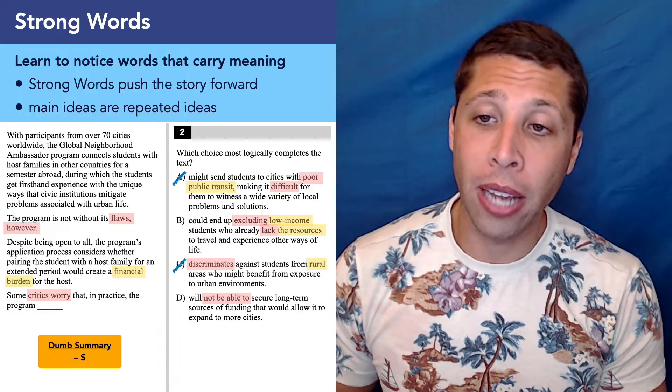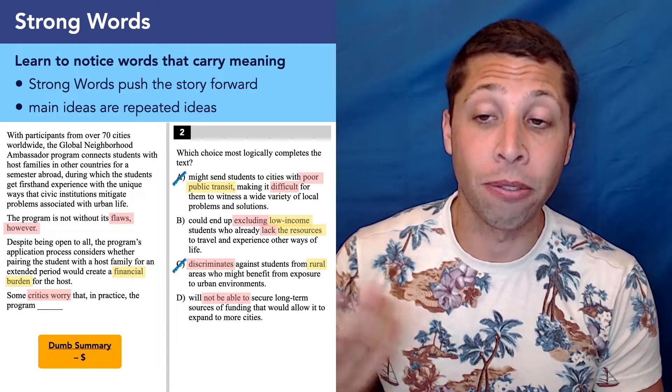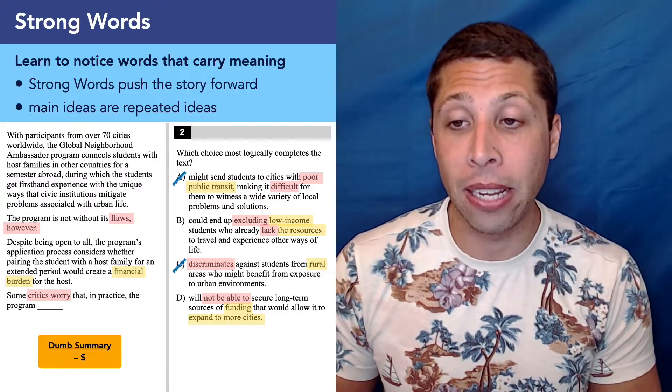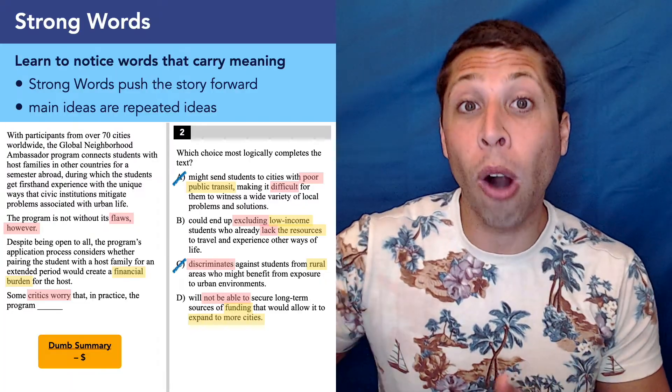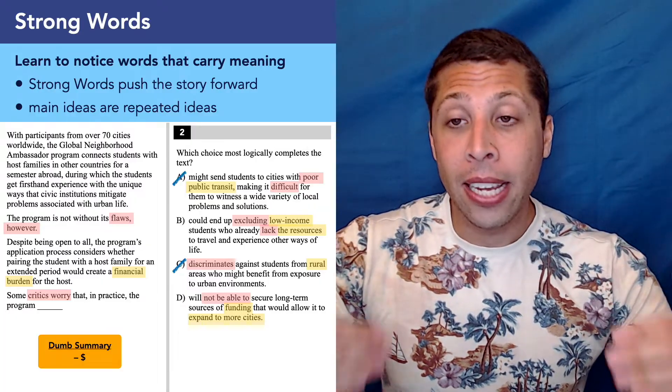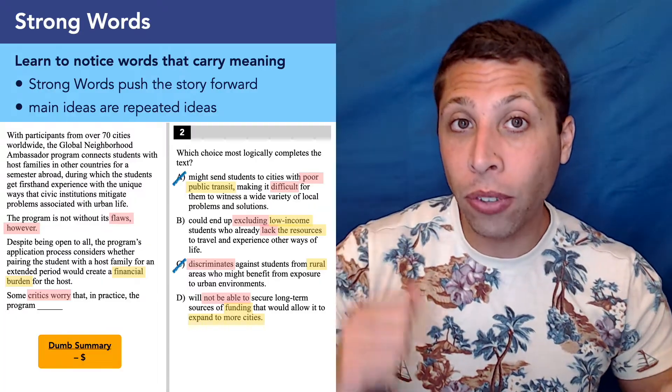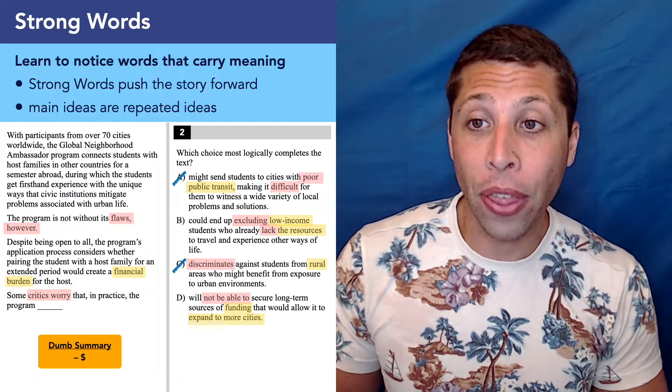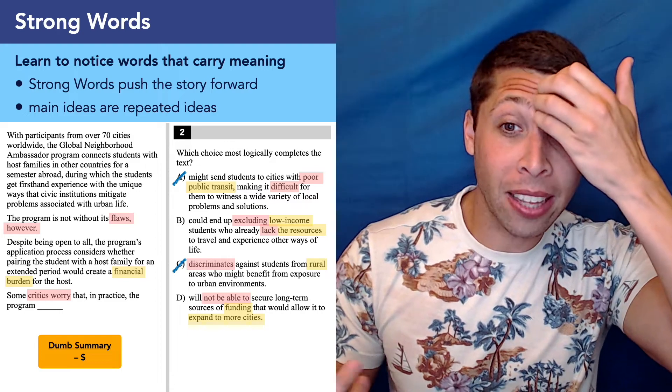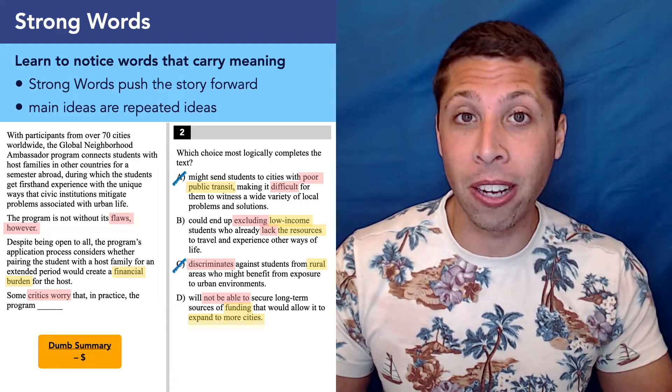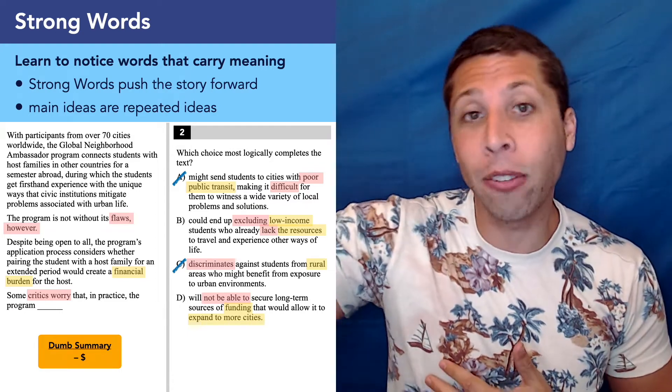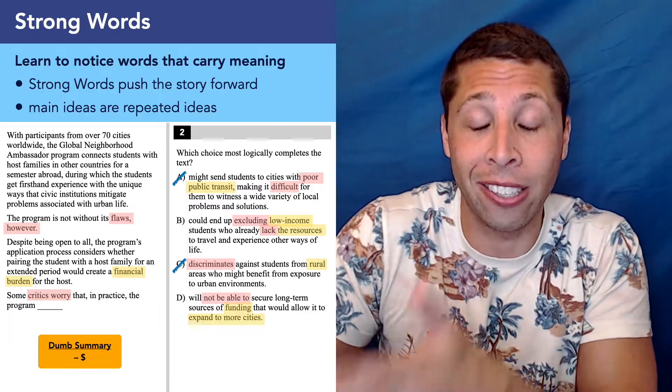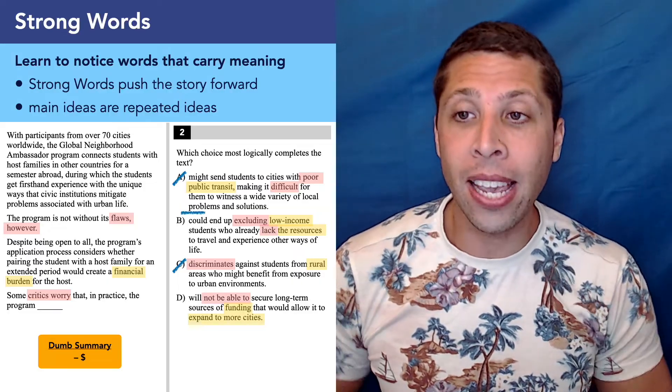Choice D, the program will not be able to secure long term sources of funding that would allow it to expand to more cities. Well, funding definitely hits that finance piece. But notice this choice is stronger than B. It hits the funding idea, hits the money idea, but then it goes further, expanding the program to more cities. Did they talk about that in the passage? I don't think so. Whereas the only other thing in B is maybe that people are traveling and experiencing other ways of life. And that is kind of what they talk about in that first sentence where they describe the program. So B is the answer.